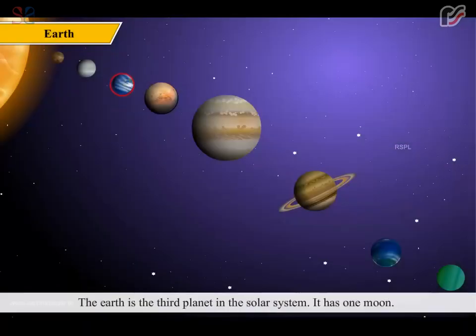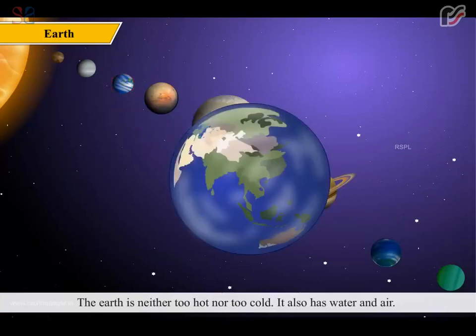The Earth is the third planet in the solar system. It has one moon. The Earth is neither too hot nor too cold. It also has water and air. Because of the presence of these features, life exists on it.